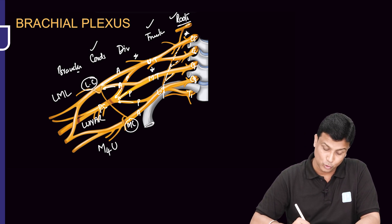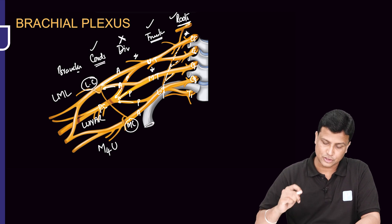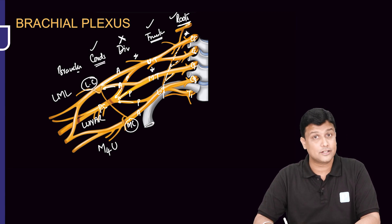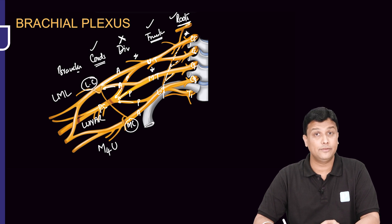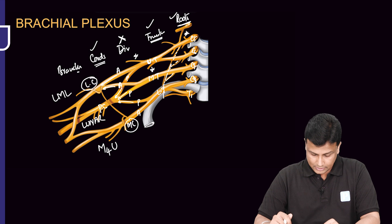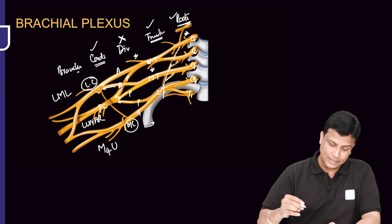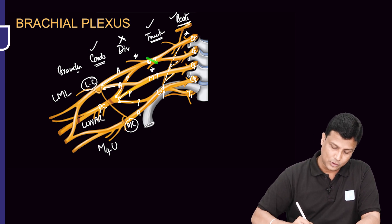So branches arise from the roots, the upper trunk, and the cords — but importantly, there are no branches from the divisions. This has already been asked in exams.